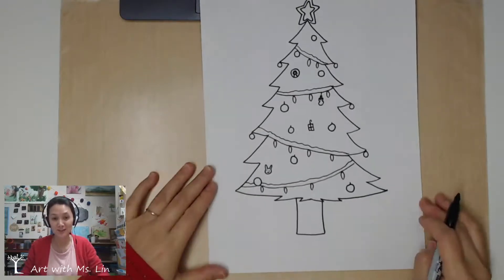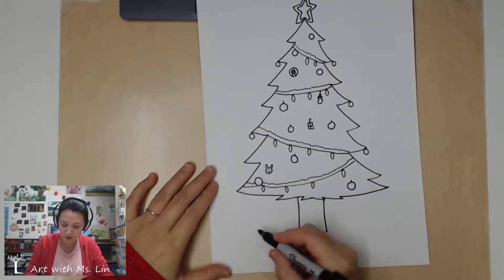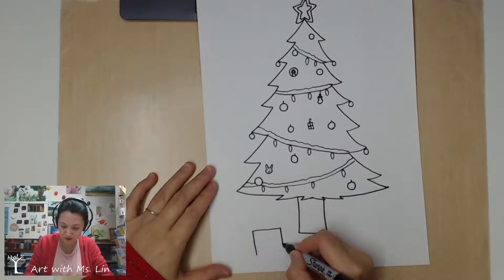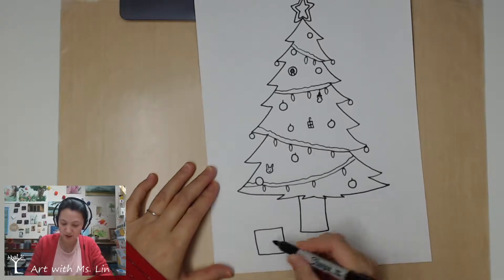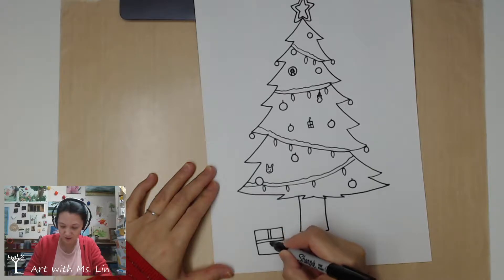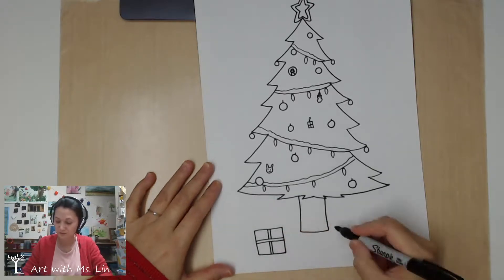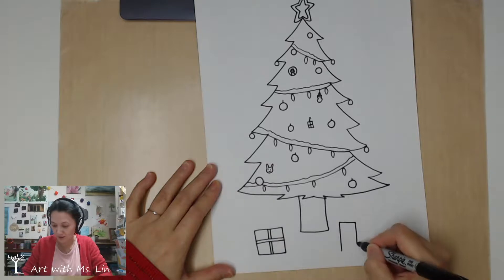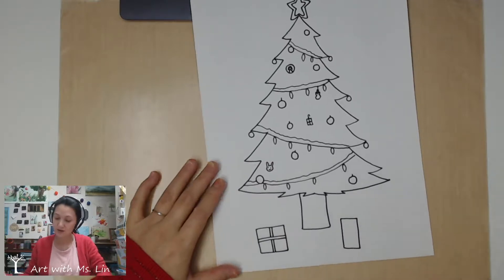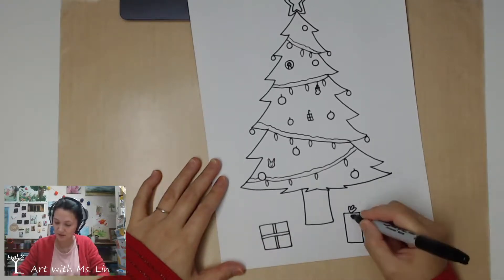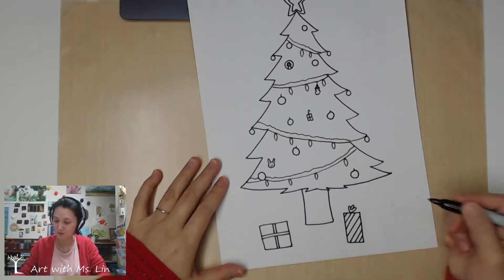And usually people have presents at the bottom. So, we can add a few regular basic rectangles or squares with a ribbon. Some taller. Different pattern paper or wrapping paper.